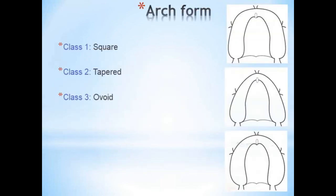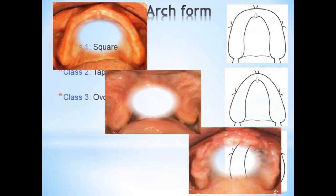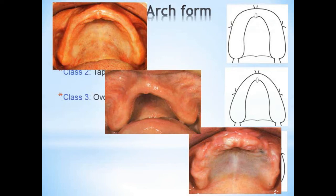Next is the arch form, which is classified as square, tapering, and ovoid. As you can see here, these are the square, tapering, and ovoid arch forms. The arch form supports the denture by offsetting the rotational movement of the denture base. The Class 1 square type is the best form to prevent rotational movement, and the tapering one is the least favorable.